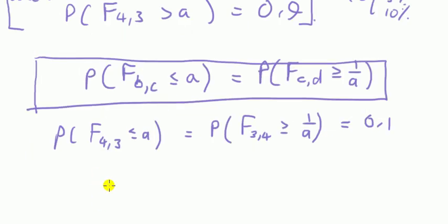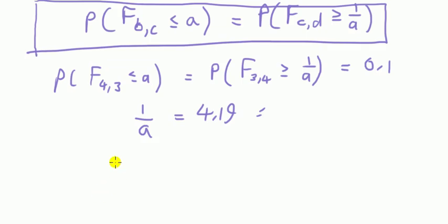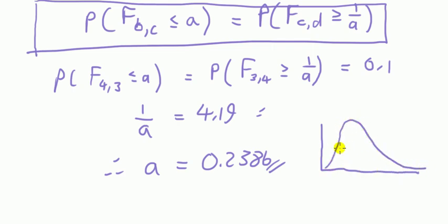So what we have is that this value, 1 over a, is 4.19-ish. Therefore, if we just rearrange it for a, same as saying a is equal to 0.2386. Okay, and that kind of makes sense, because for probability of 0.1 in the left here, it's not that high, so we should be quite close to zero, and indeed 0.2386 along here. So that's it.